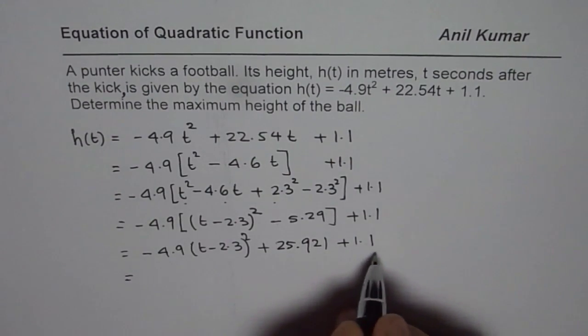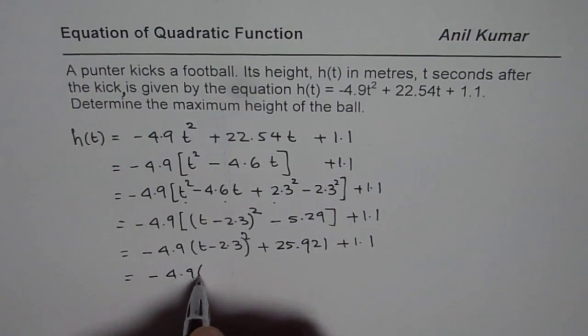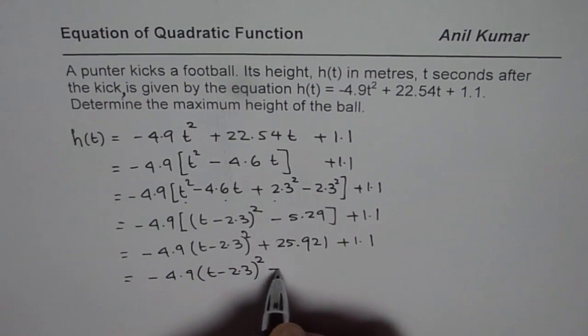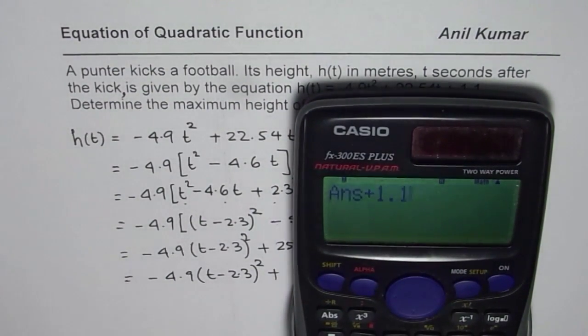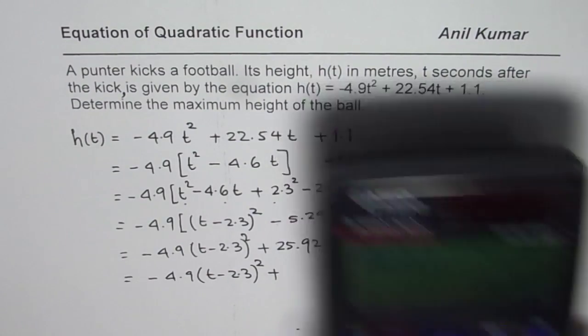So now, we can combine these two constants. We get -4.9(t - 2.3)², plus, let's add 1.1 there, plus 1.1 gives us, in decimals, 27.021.